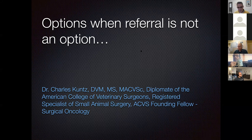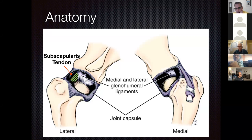The first clinical situation we're going to talk about is medial shoulder instability. Medial shoulder instability is arguably the most common cause of forelimb lameness in mature dogs.